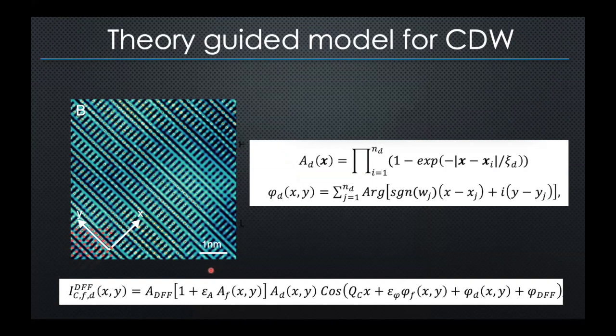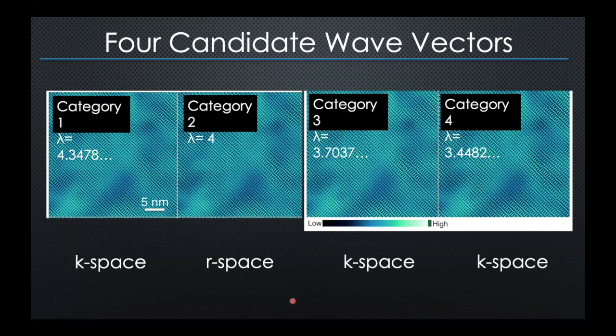It turns out we can think about what charge density wave patterns should look like if we think of it abstractly as a pattern. Our theoretical understanding of charge density waves tells us that the CDW is going to have some modulation with some wave vector q, and there is going to be phase disorder — either due to smooth fluctuations or topological defects — and amplitude disorder. So we can model this and think about what a pattern guided by some organizing principle will look like.